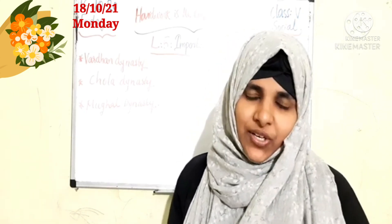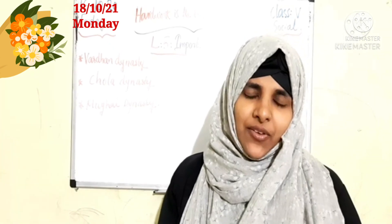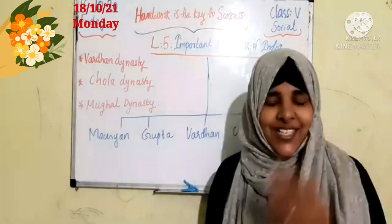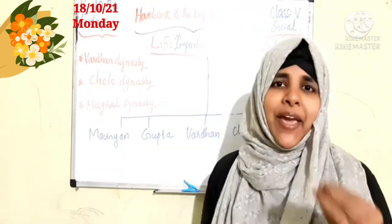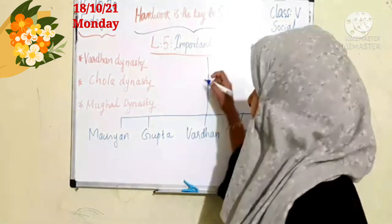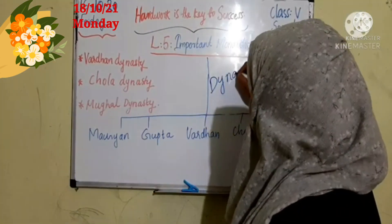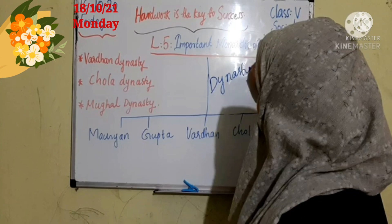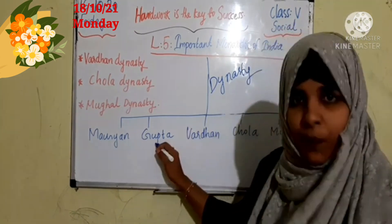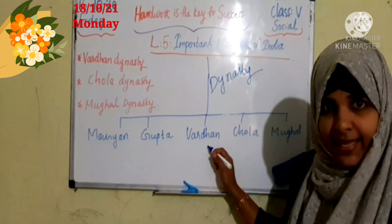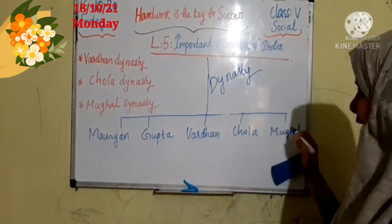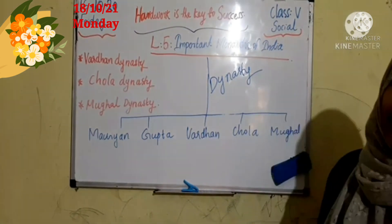Does anybody remember? Then say together. In our last class we learned the main 5 dynasties: Mauryan dynasty, Gupta dynasty, Vardhan dynasty, Chola dynasty, and Mughal dynasty.